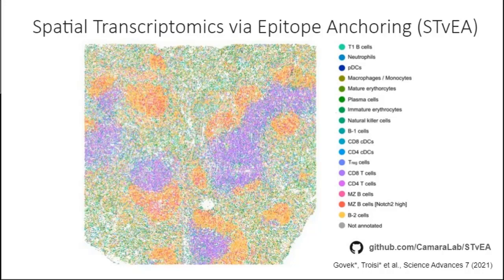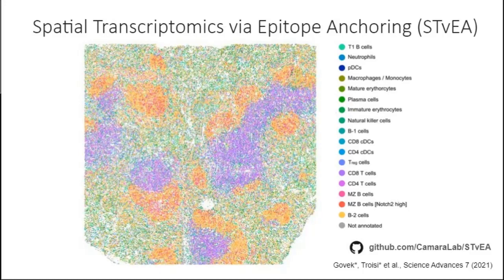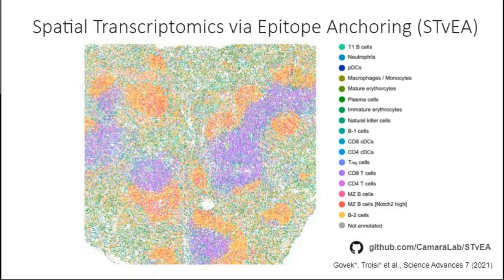We then applied STEVIA to this CODEX dataset using the reference CITE-seq data to annotate in an automated manner the cells in the CODEX images. Here we have one of the tissue sections where STEVIA has annotated all the different cells using labels from the CITE-seq dataset. You can see the very high phenotypic resolution achieved by this method — we are not only finding cell populations for which the antibody panel was specifically devised, but also finding cell populations for which the panel did not include any specific marker, for instance different stages of erythroblast maturation.